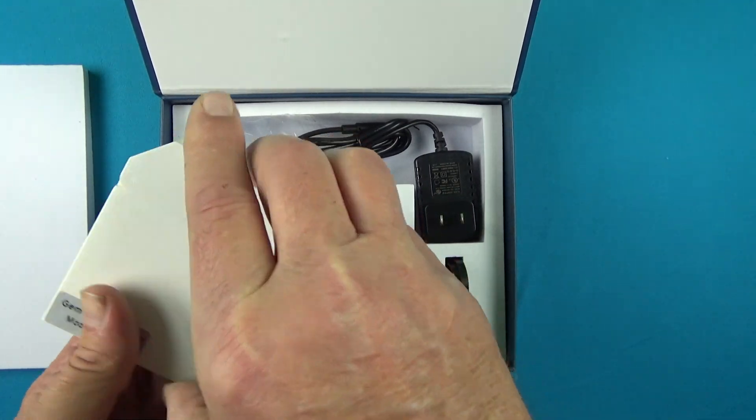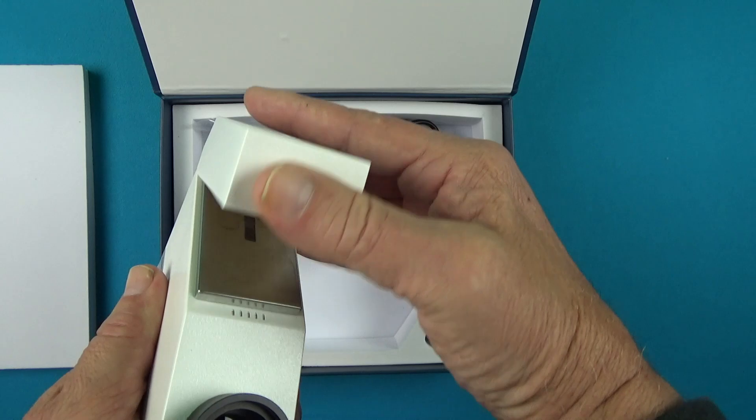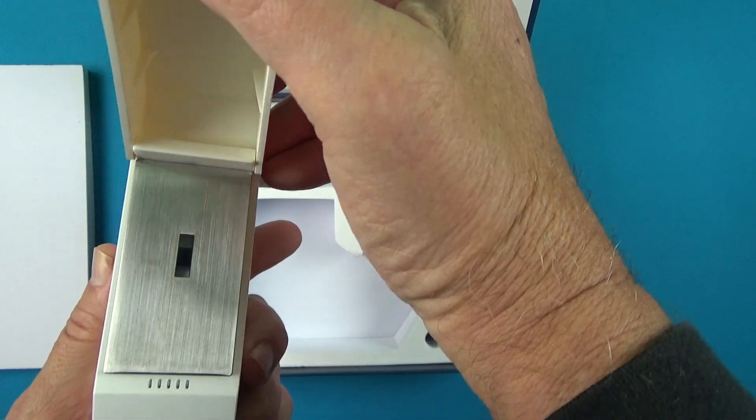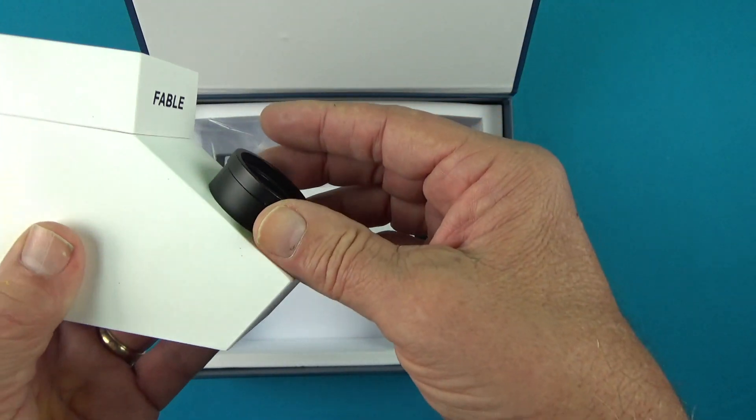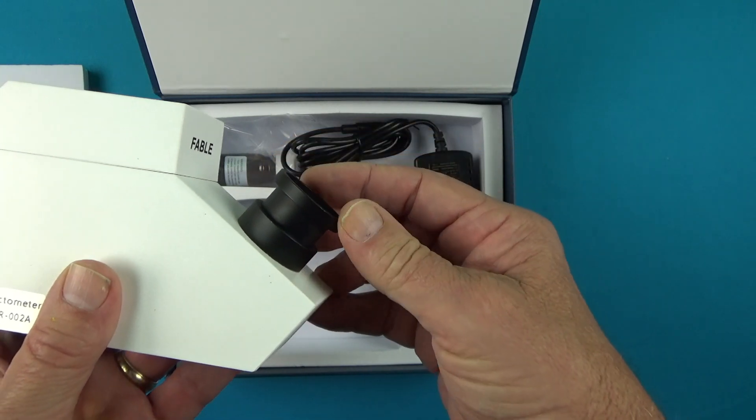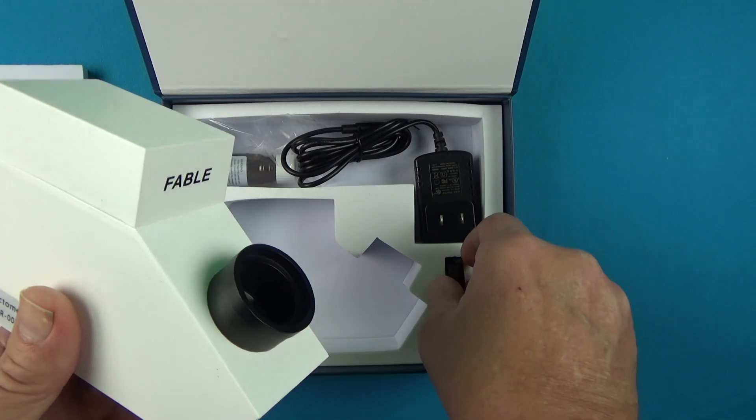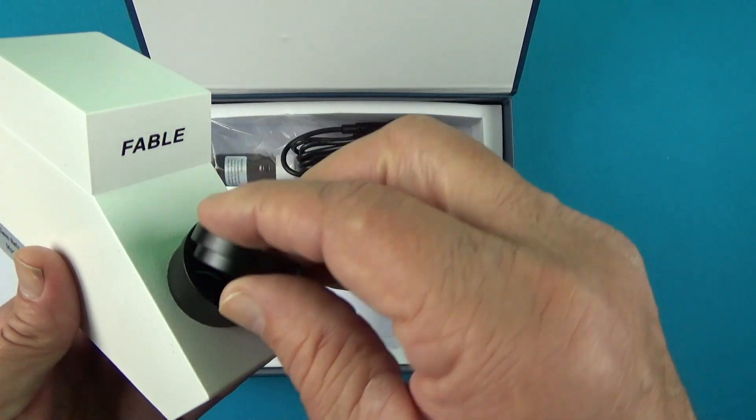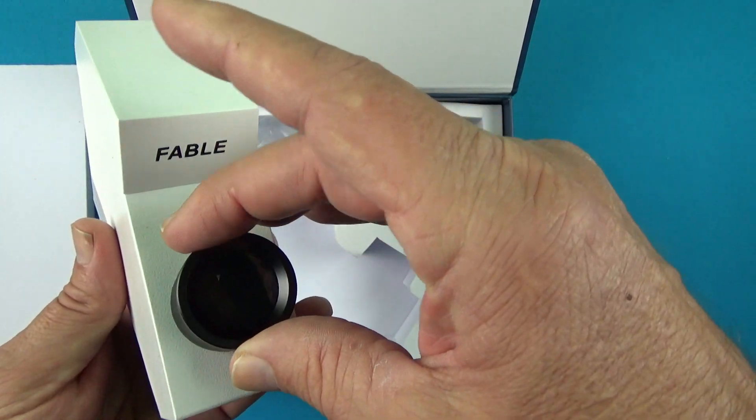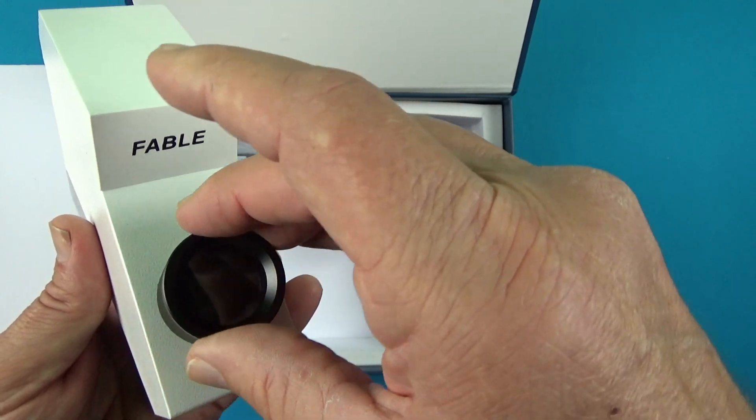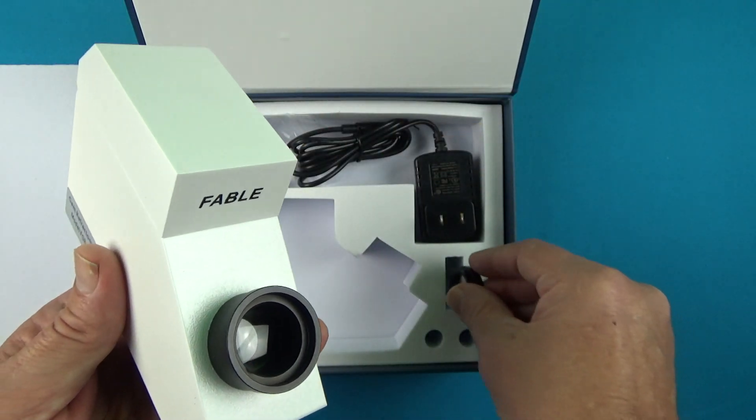Your refractometer comes with a cover that you're going to want to use anytime you're taking a reading. That cover needs to be closed. It has a focus eyepiece you can adjust to your eyes. You can put your polarizing filter here and rotate it to get multiple readings.